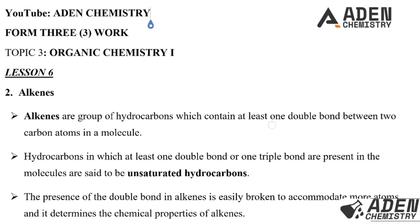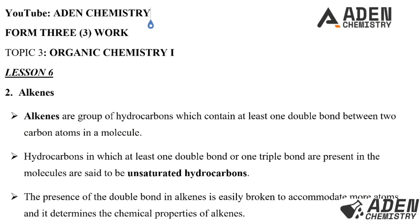Alkenes are a group of hydrocarbons which contain at least a double bond between two carbon atoms in a molecule. A double bond looks like this. Hydrocarbons in which at least one double bond or a triple bond are present in the molecule are said to be unsaturated hydrocarbons. So alkenes are unsaturated hydrocarbons.